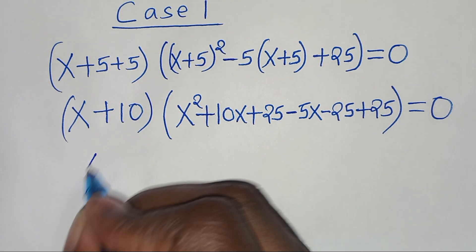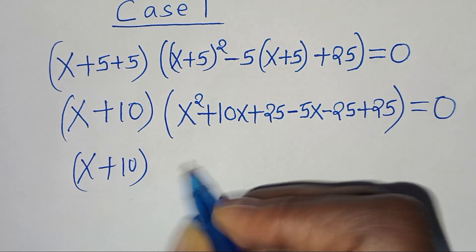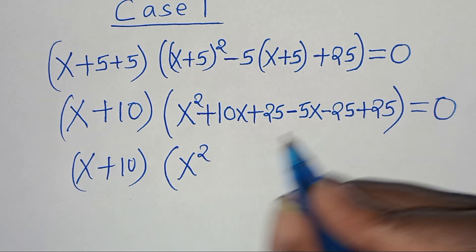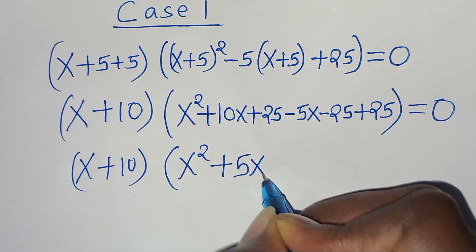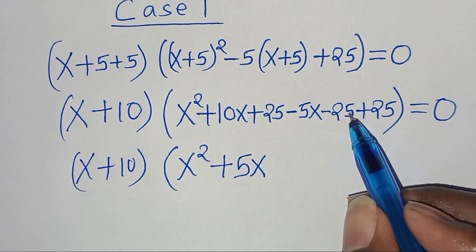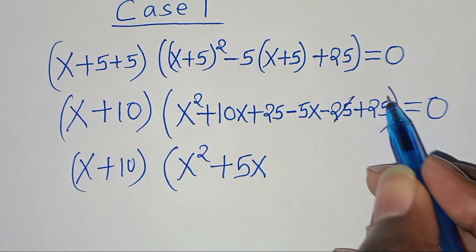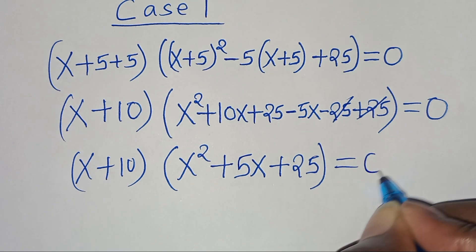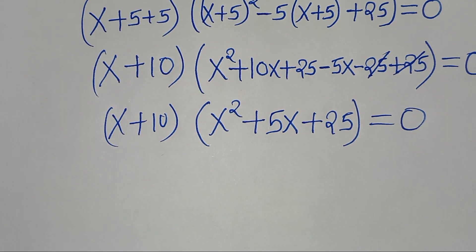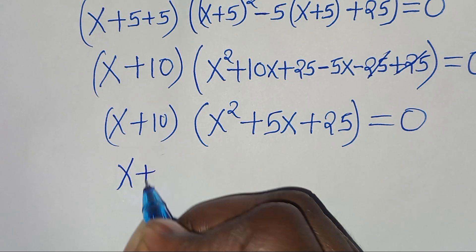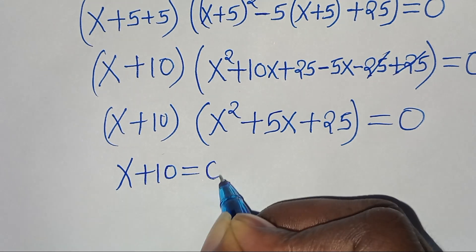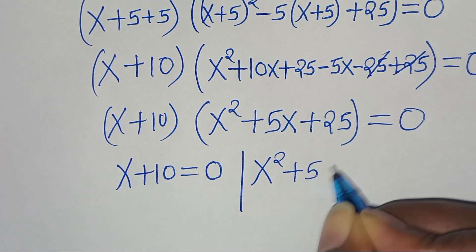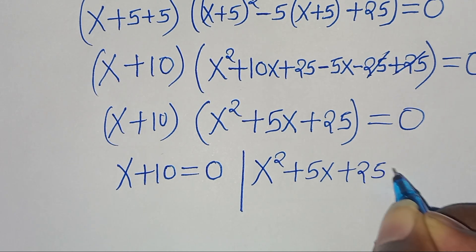Therefore we have x plus 10, times x squared plus — combining 10x minus 5x gives plus 5x — and minus 25 plus 25 simplifies, giving plus 25. So we have x plus 10 times x squared plus 5x plus 25, equal to 0. The first part gives x plus 10 equal to 0, and the second part gives x squared plus 5x plus 25 equal to 0.